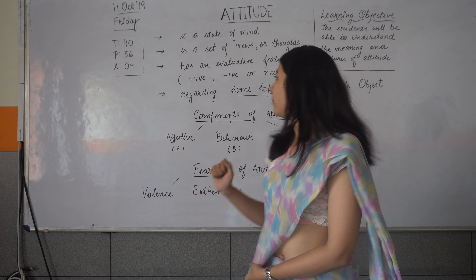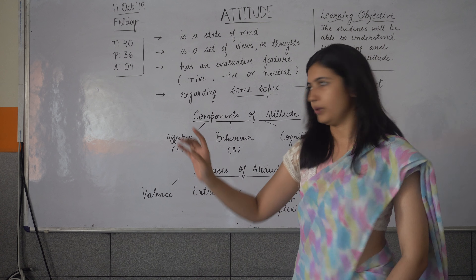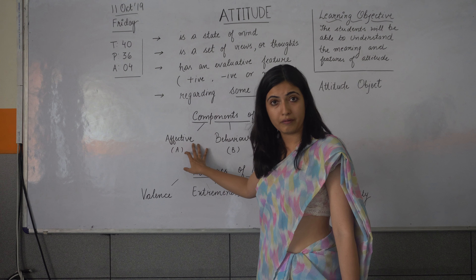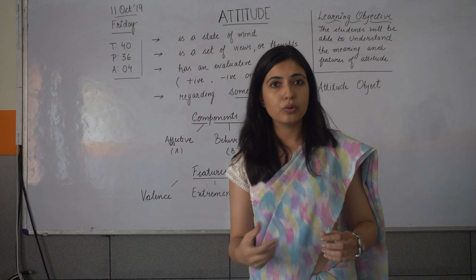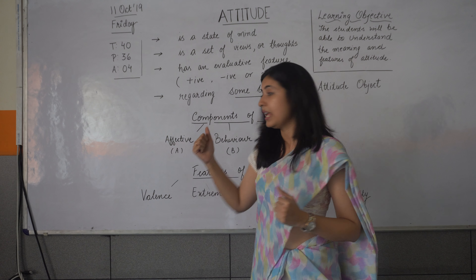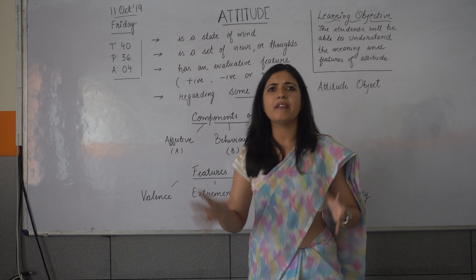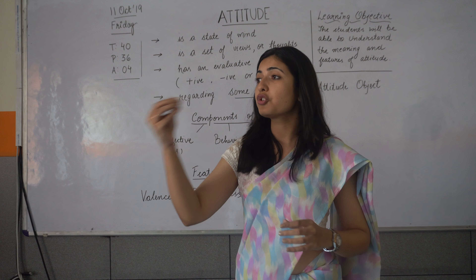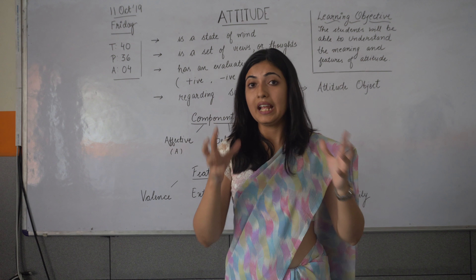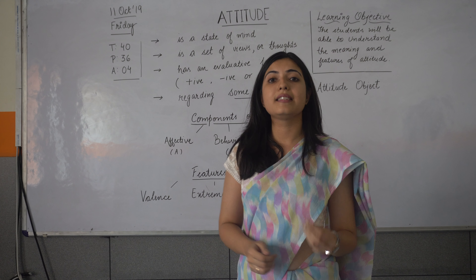Let us now talk about the components of attitude. Basically there are three components of attitude — A, B, and C. A is for affective, which means if we have an attitude towards something like mobile phones, we are very emotional towards it. B is our behavior towards it. So if I have a negative attitude towards mobile phones, you will see that I am not using it or I particularly deny the use of mobile phones. Behavior refers to the tendency to act.